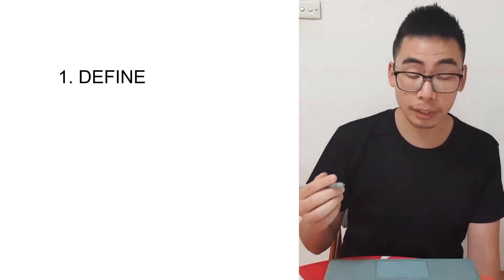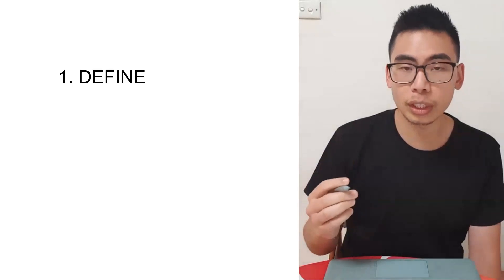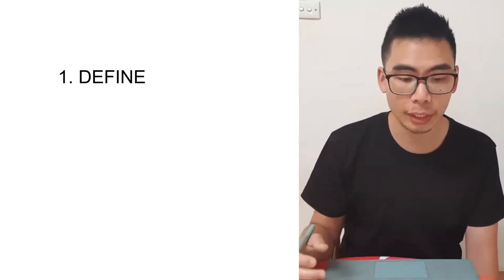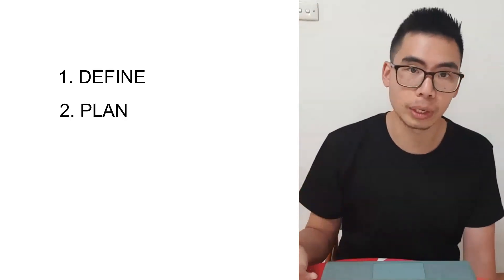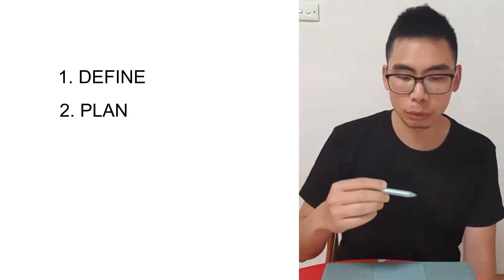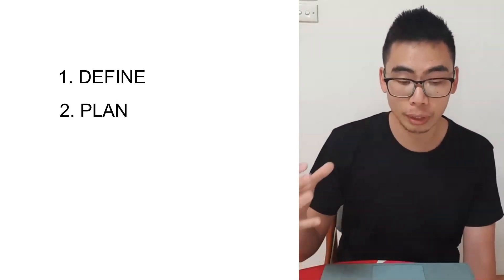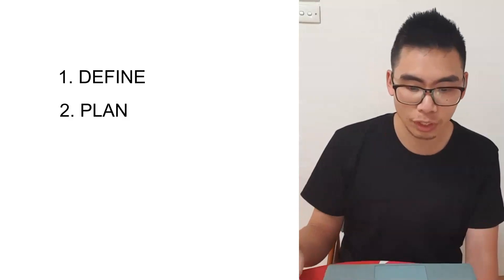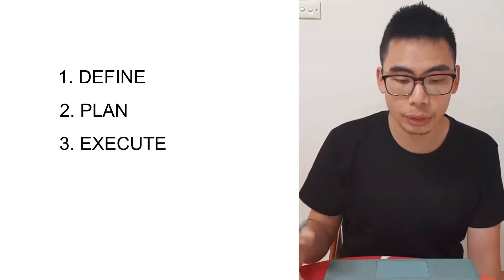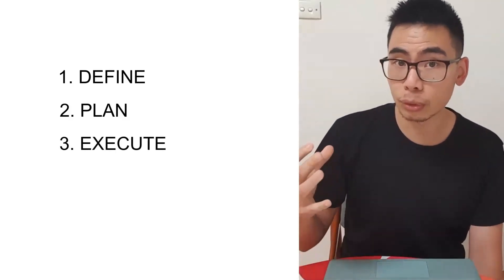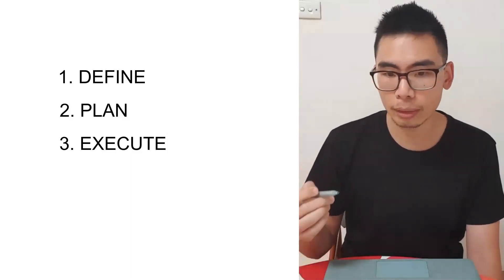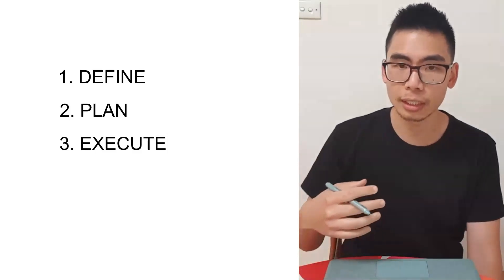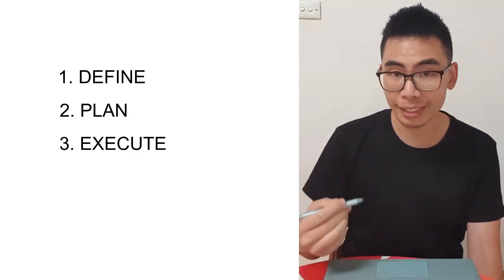I like to break it down to four major steps. Number one is to define the problem — that's typically what we go through first, figuring out what the question is asking. In the next step, we plan: what can we do and how do we go about solving this problem? You look around the question, think about what you know, and decide if it's relevant. Then in the third step, execute — once we know what the question is asking and have an idea of what to do, we do it, employing skills like rearranging equations, substituting, and estimating.